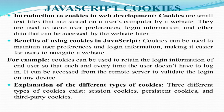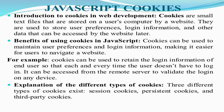So JavaScript cookies — introduction to cookies in web development. Cookies are small text files that are stored on a user's computer. This user is the end user who is going to the internet to obtain certain information. This cookie is being stored on a user's computer by any website that the end user visits to get useful information. They are used to store user preferences, login information such as username and password, mobile number, email ID, and other data that can be accessed by the website at a later time.